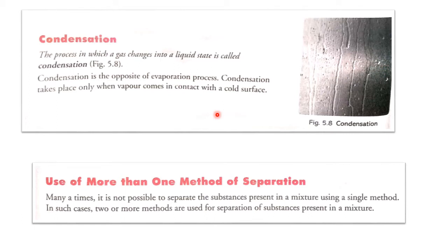Condensation takes place only when vapor comes in contact with a cold surface. You can see in the picture that the vapor comes in contact with the glass and forms into a liquid.